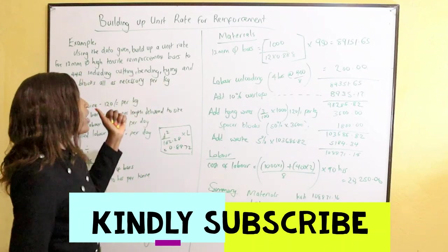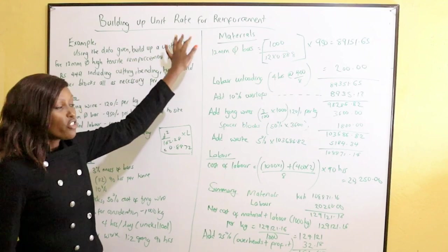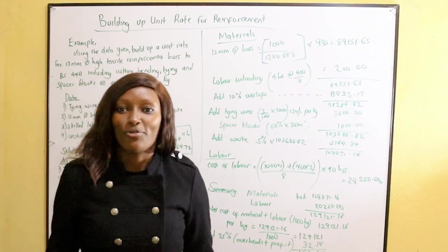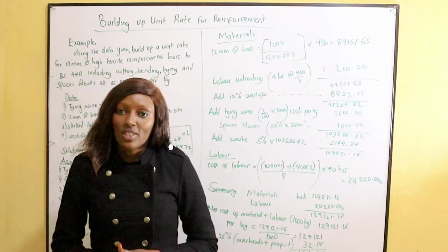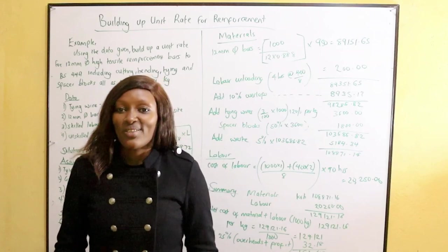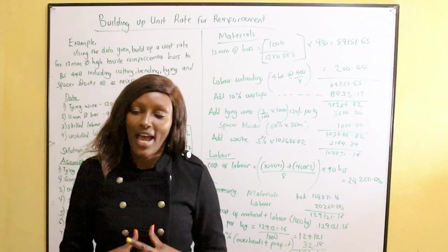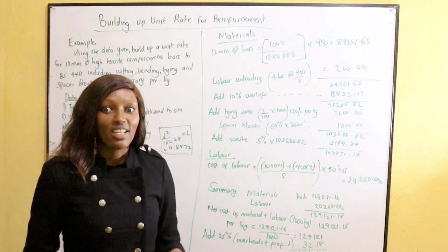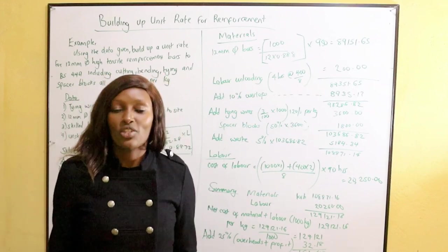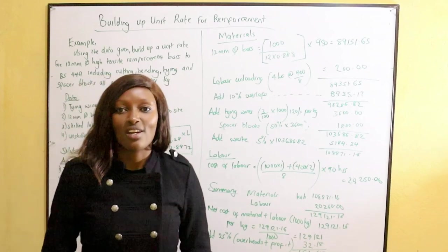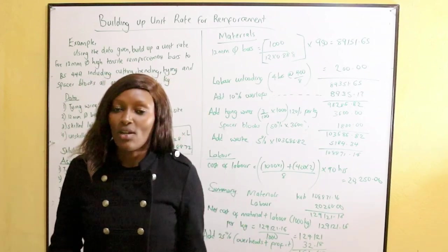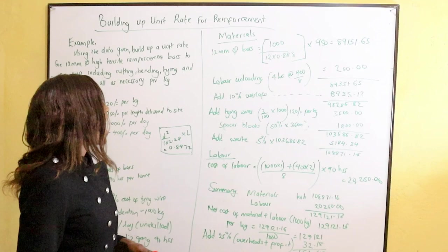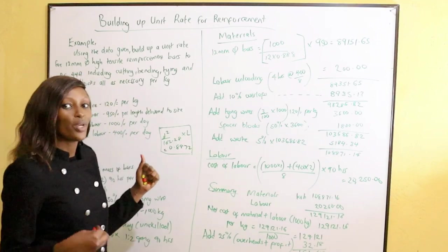Our assignment is to build up the unit rate for reinforcement. Reinforcement bars are usually added to concrete to reinforce it — adding more strength. Reinforcement bars come in different types: we have mesh types like BRC wire mesh, and we also have the bars like Y8, Y10, Y25, R6, R8. Today's question asks us to build up a unit rate for reinforcement bars.